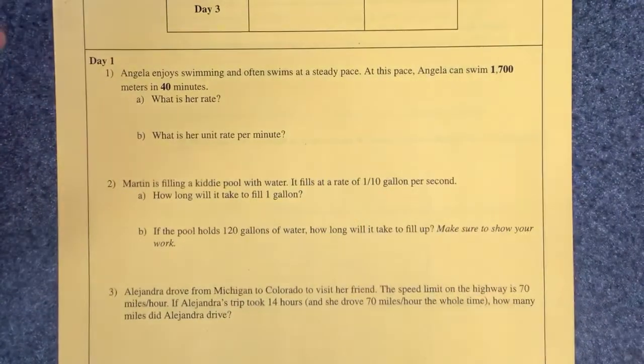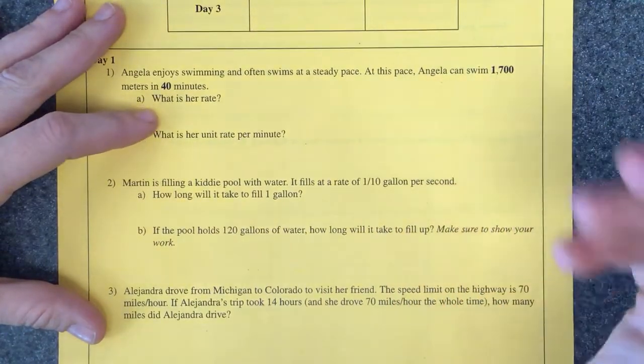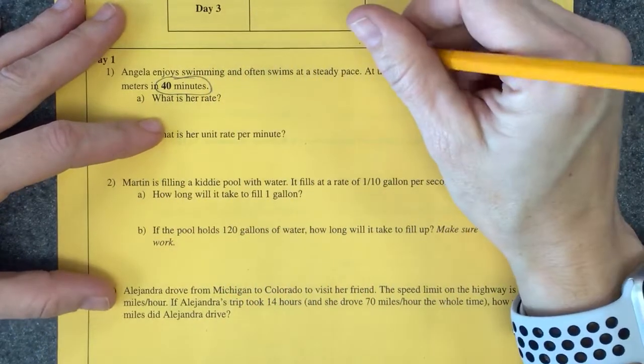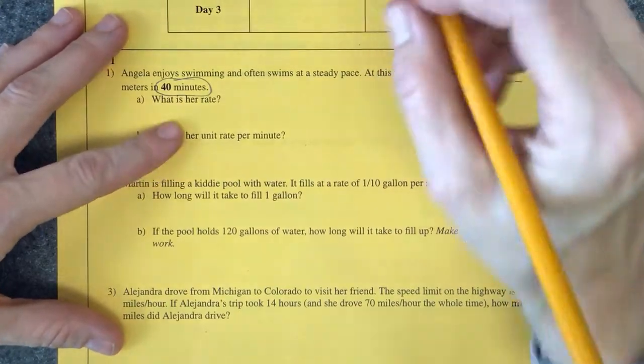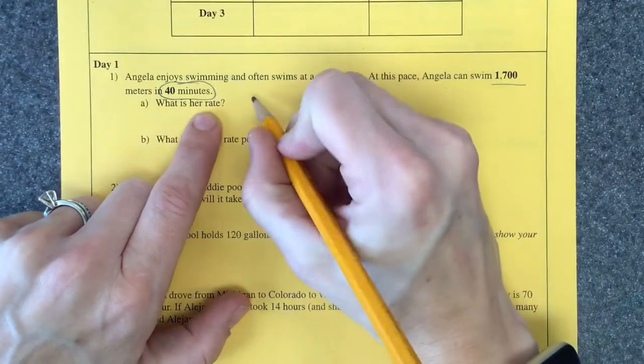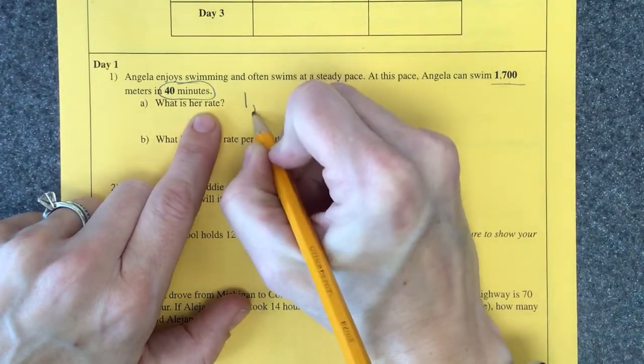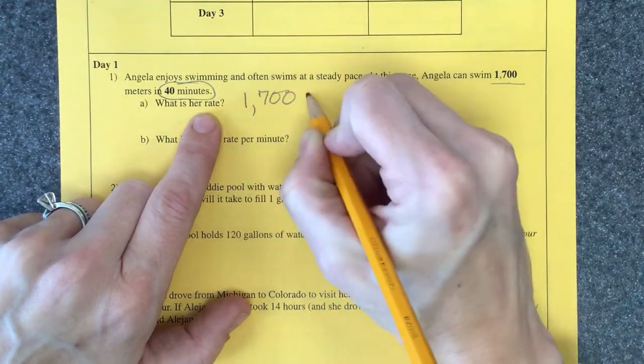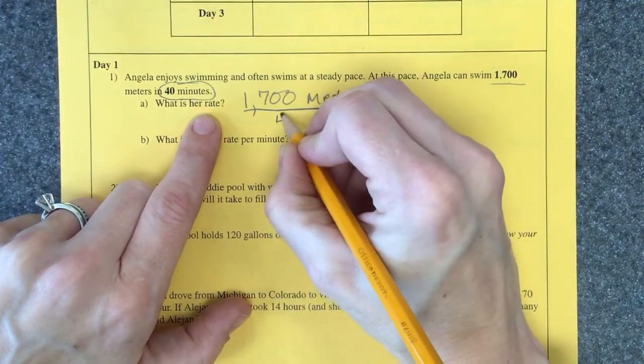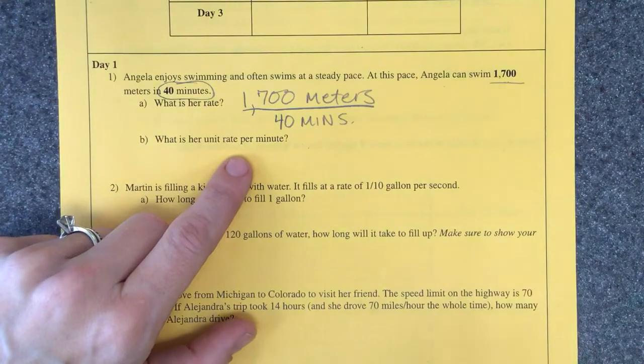All right, Angela enjoys swimming. At this pace Angela can swim 1700 meters in 40 minutes. So while I'm filming I'm getting a back massage, it's pretty awesome. Now what is her rate? Well how many meters could she swim? So everybody write 1700 meters in 40 minutes. Good job.